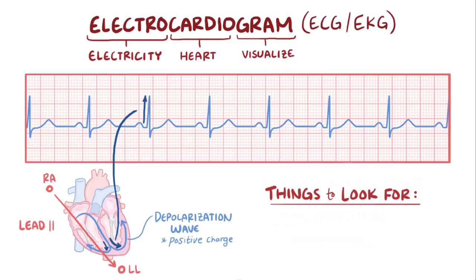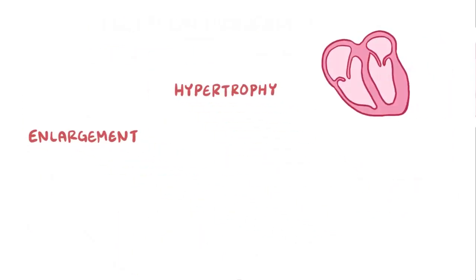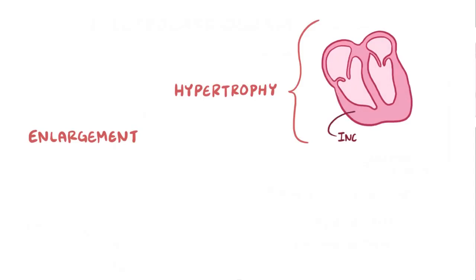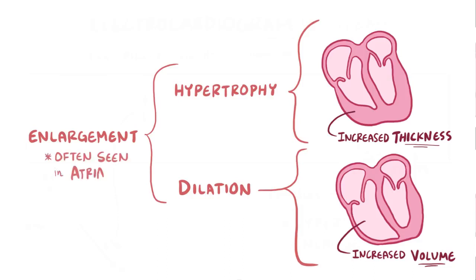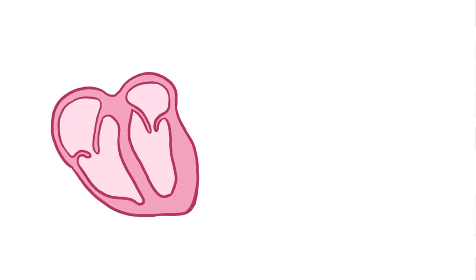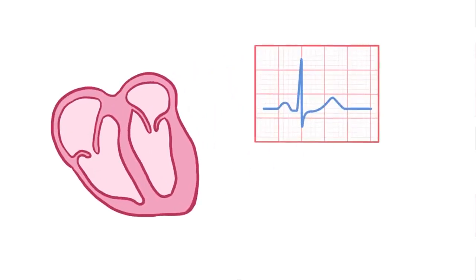There are lots of things to look for when reading an ECG, and one of them includes figuring out if part of the heart has undergone hypertrophy or enlargement. Hypertrophy means that the heart's muscular walls increased in thickness, while dilation refers to an increase in the volume of a chamber. The term enlargement is generally used when both hypertrophy and dilation happen together, and this is what typically happens in the atria. In contrast, the ventricles often undergo hypertrophy without dilation.